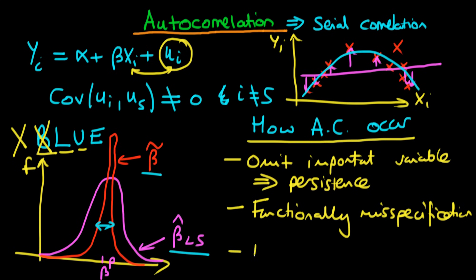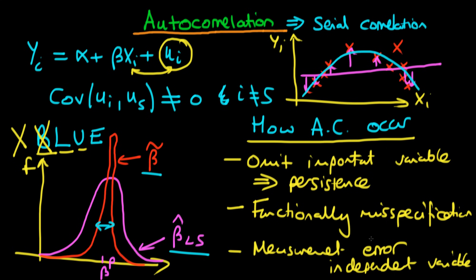The final way autocorrelation can occur is if we have measurement error — specifically measurement error in the independent variable. If that measurement error is persistent through time, it will be present in u_i, and that persistence leads to autocorrelation. In each of these three cases — omitted variable, functional misspecification, and measurement error — OLS will no longer be unbiased, which is a much greater problem. Having serial correlation is often symptomatic of more serious problems with your model, as well as the fact that OLS is no longer BLUE.